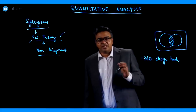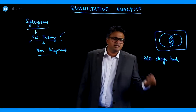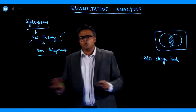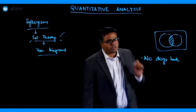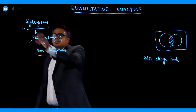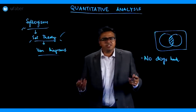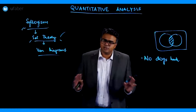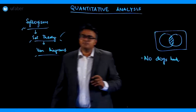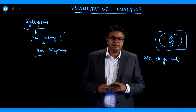Just like in blood relation questions the only thing you need to do is make the family tree, and in direction questions you draw the diagram correctly — similarly in these questions if you can make the Venn diagram correctly, these questions are solved. I will repeat again: if you do not know what Venn diagrams are, please go back to the chapter where we covered Venn diagrams in detail.